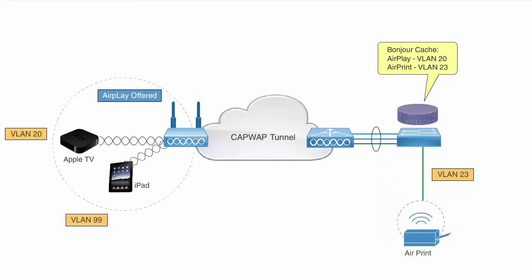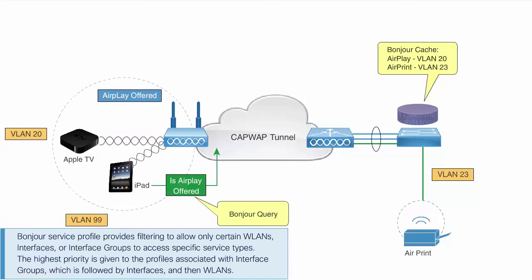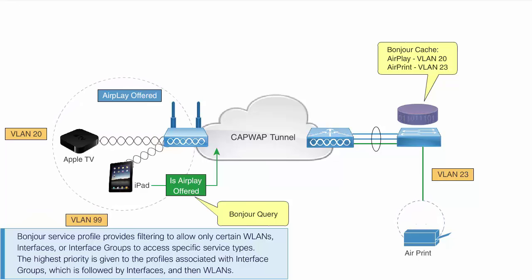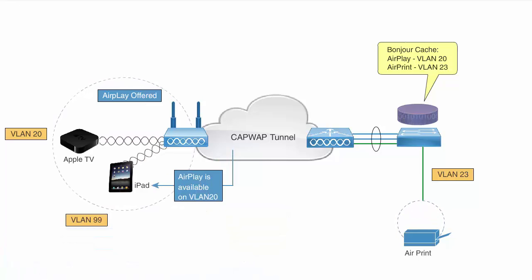Cisco WLC listens to any of the client queries requesting for services. Bonjour service profile provides filtering to allow only certain WLANs, interfaces, or interface groups to access specific service types. The highest priority is given to the profiles associated with interface groups, which is followed by interfaces and then WLANs. Cisco WLC sends unicast response to the client queries for Bonjour services.